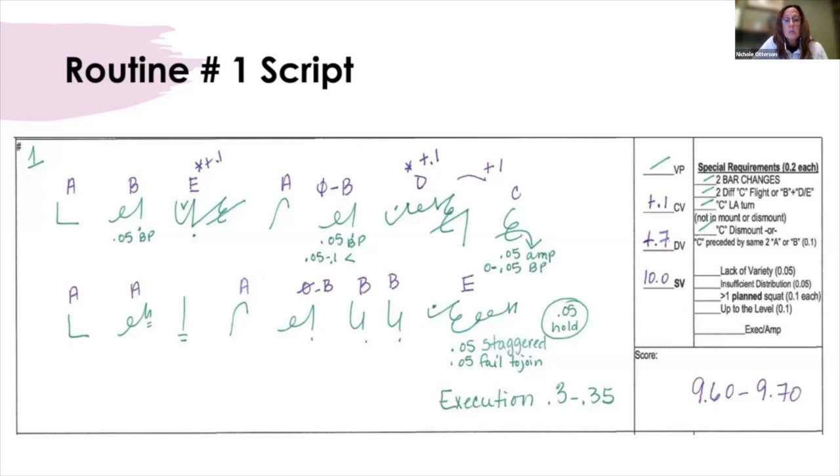So the execution came in somewhere between .3 and .35 and the score range 9.6 to 9.7 with a 9.6.5.